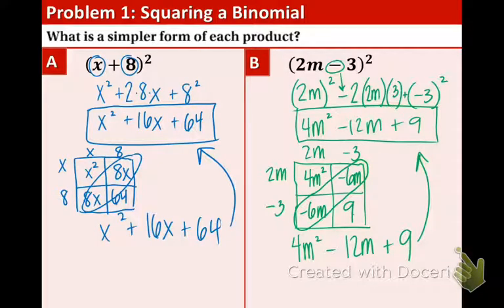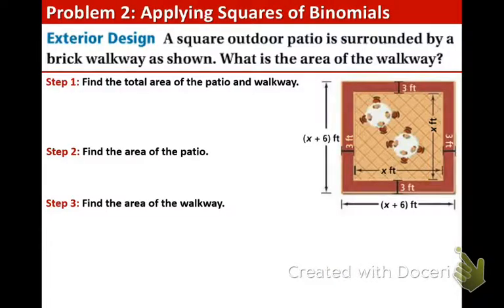So you just learned how to square a binomial. Now let's look at an application problem. A square outdoor patio is surrounded by a brick walkway as shown in the picture. What is the area of that walkway? Step 1. Find the total area of the patio and the walkway together. So basically all we have to do is just take this times this, the dimensions. Remember a square just means the sides are all equal to each other.